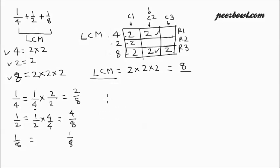Now the addition becomes very simple. For 1 upon 4, we can write 2 upon 8, plus 1 upon 2, we can write 4 upon 8, and 1 upon 8 will be as it is.